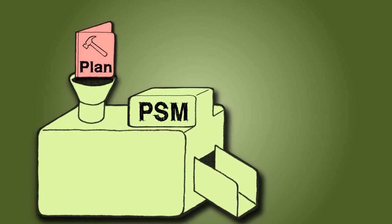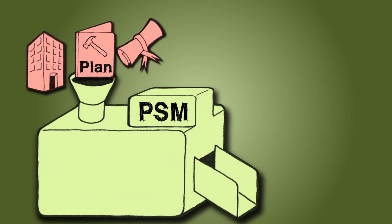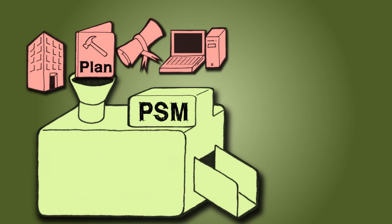As we discussed earlier, the project charter is not the scope statement, but it's a big part of it. This is where you get your big-picture goals that are later broken down into manageable tasks. Enterprise environmental factors and the organizational process assets the project manager has can have a big influence on how easy or difficult the project will be to complete successfully.